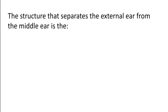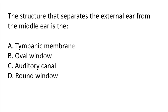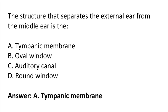The structure that separates the external ear from the middle ear is the: Tympanic membrane, oval window, auditory canal, round window. The correct answer is option A — the structure that separates the external ear from the middle ear is the Tympanic membrane.